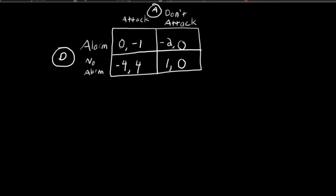What do these payoffs represent? If the defender sounds an alarm and the attacker attacks, the defender earns zero because he detected the attacker, but the attacker gets a payoff of negative one because he was caught. Attackers don't want to be caught, so they can possibly go to jail or face prison or something like that.